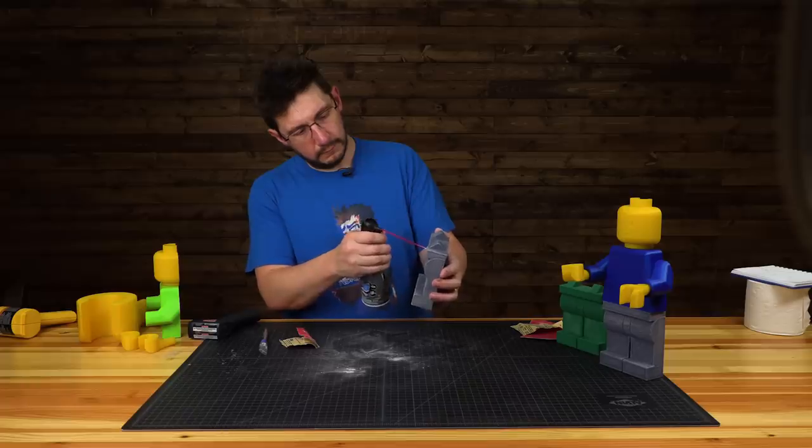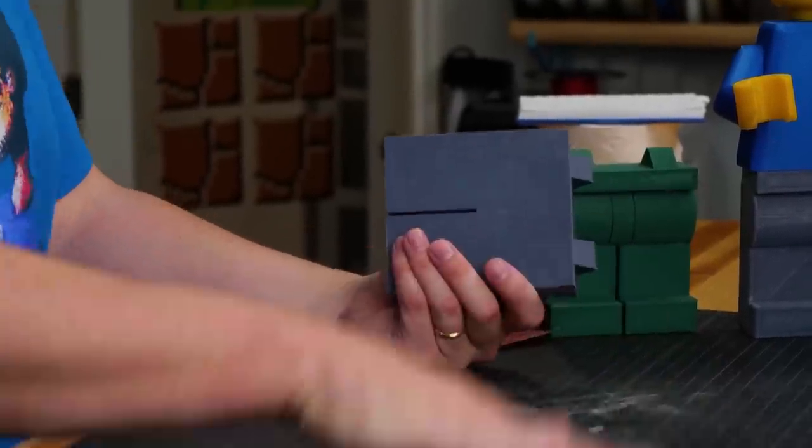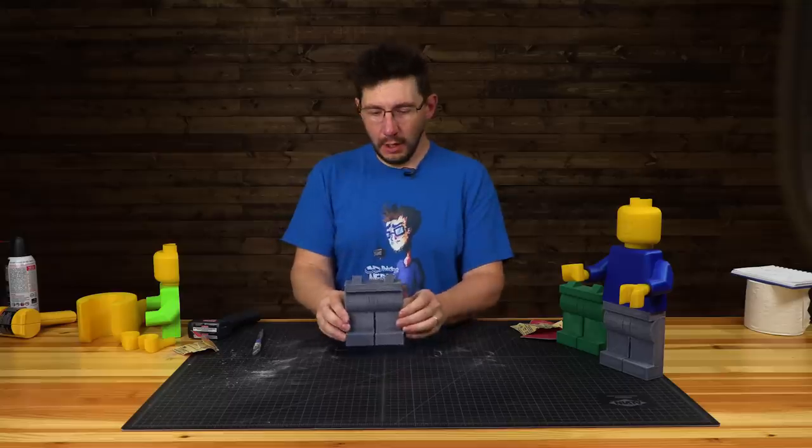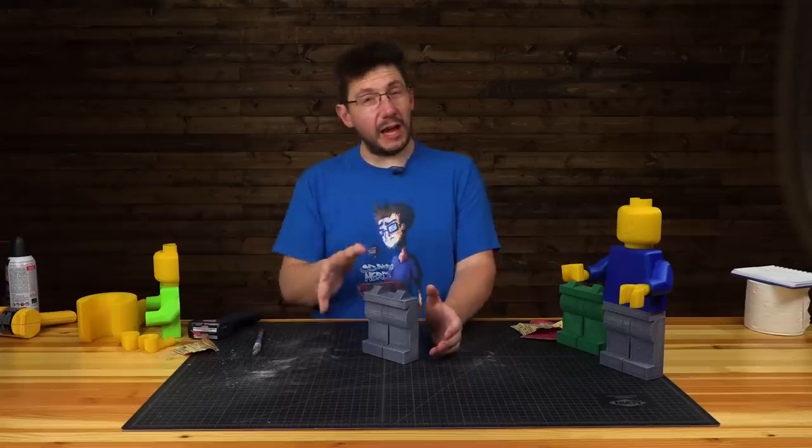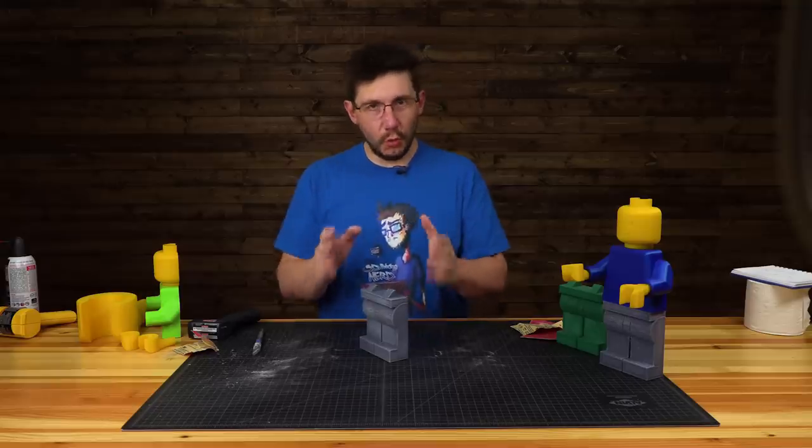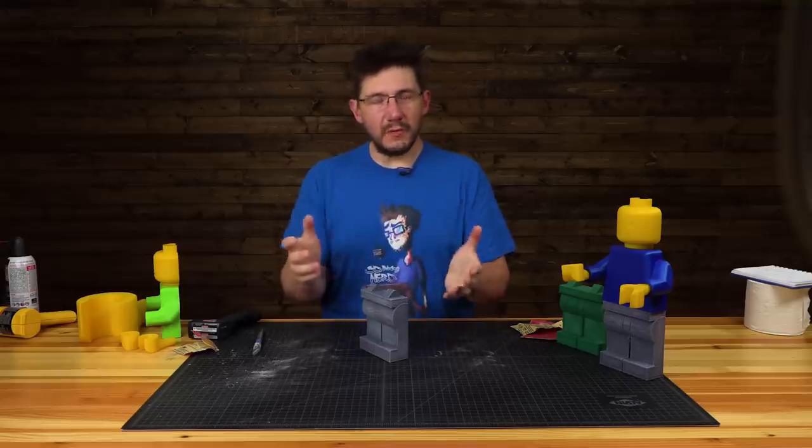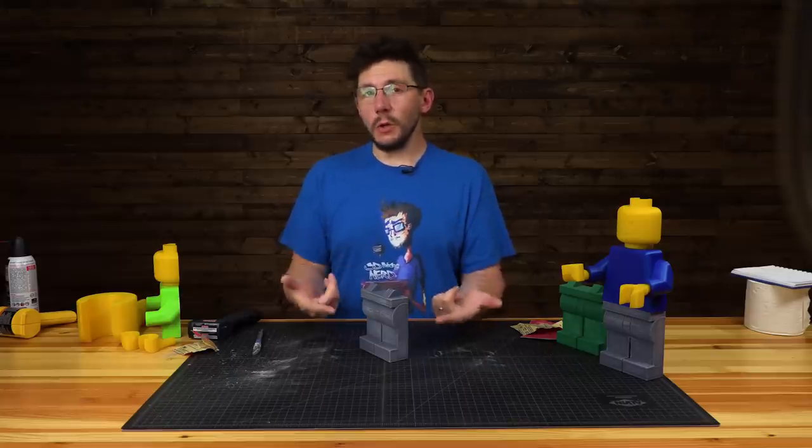That's why you have people like Harrison Crix from Volpin Props or Bill and Brittany Duran of Punished Props - they use a lot of ABS. ABS is phenomenal to sand. Future Joel is telling Joel in the past you should have used ABS.